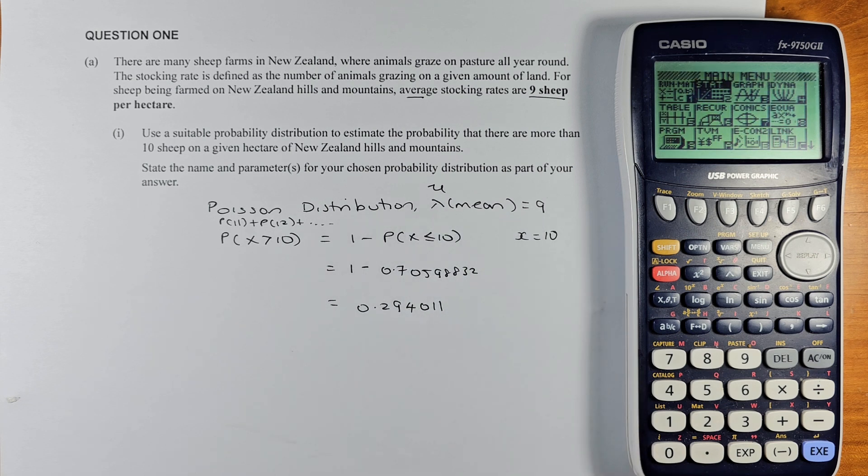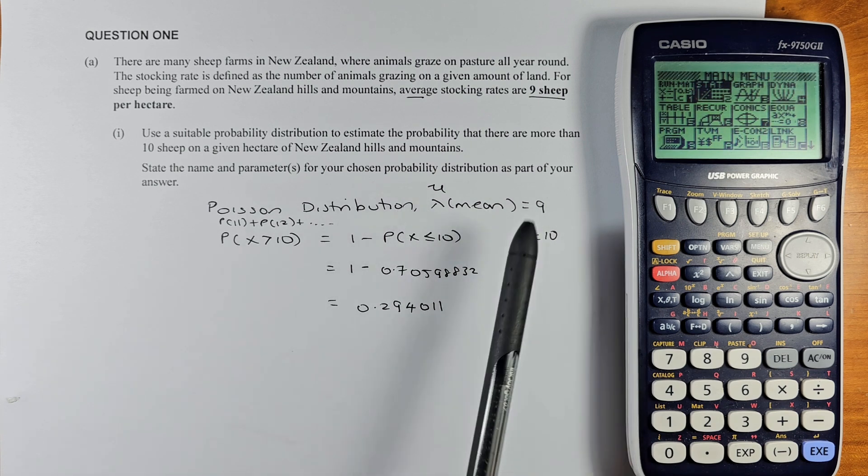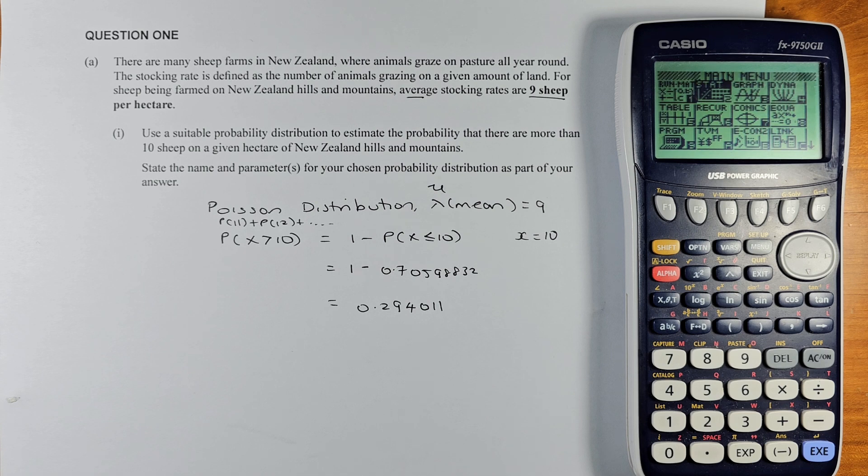If you are using the formula, you use lambda. If you are using the graphic calculator like I have in front of me, you have to use nu as your mean. So it's Poisson lambda or nu equals 9.